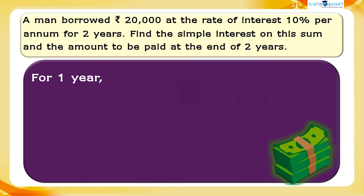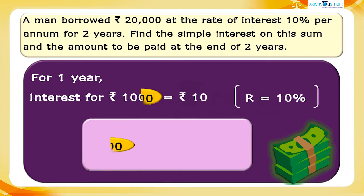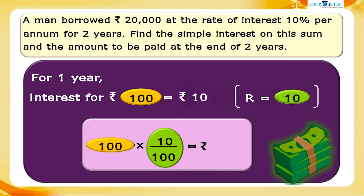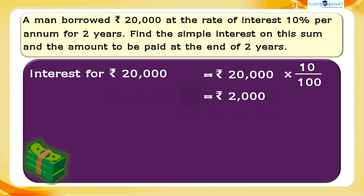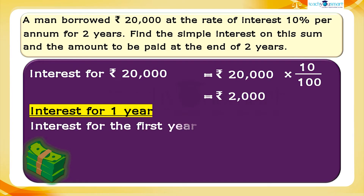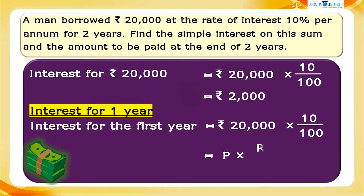First, we calculate the interest for one year. Given the rate of interest is 10%, that is, for 100 rupees the interest is 10 rupees. Then for 20,000 rupees, the interest is 20,000 multiplied by 10 divided by 100, which equals 2,000 rupees. That is, the interest for the first year equals P multiplied by R divided by 100, which equals 2,000 rupees.